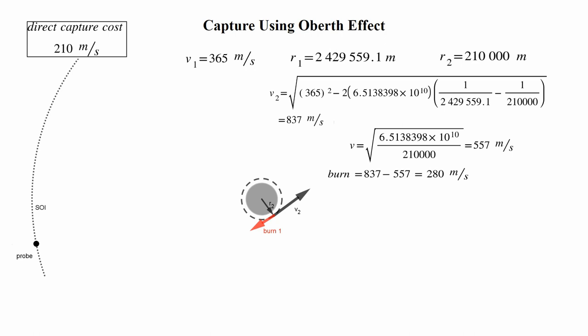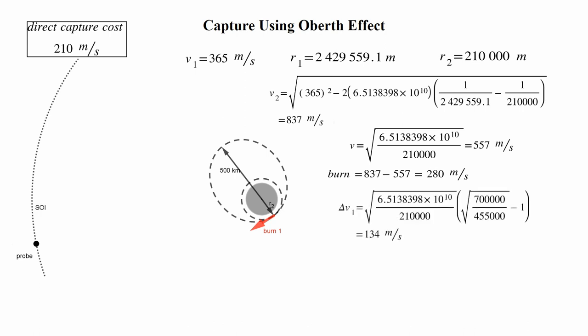But hang on, I don't want my capture to be circular. I want my apoapsis to be at 500 kilometers. We fix this by using the first vis-viva equation to calculate the burn that would be necessary to push our apoapsis from 10 kilometers to 500 kilometers. This number represents the amount we overcooked during our capture, so we just have to subtract this off our capture costs. The vis-viva equation gives us 134 meters per second. Subtracting this off the 280 gets a capture burn of just 146 meters per second.